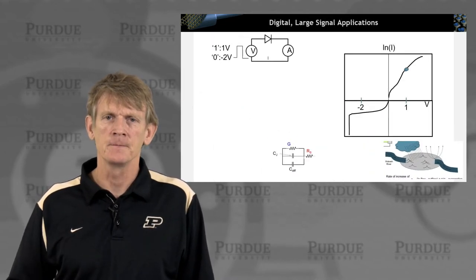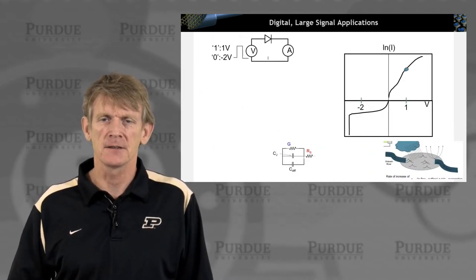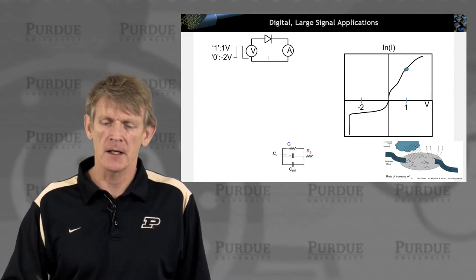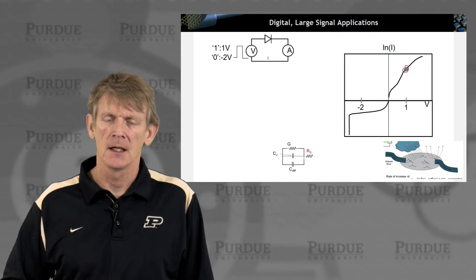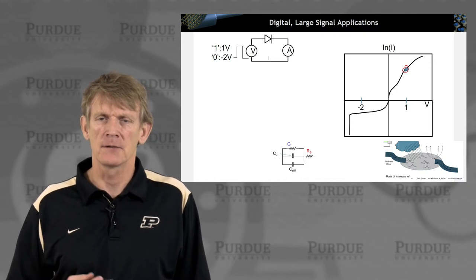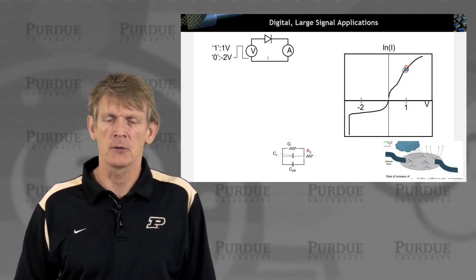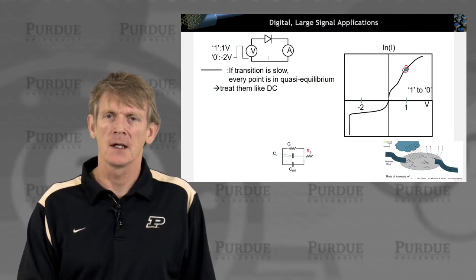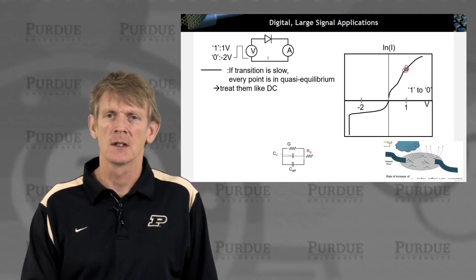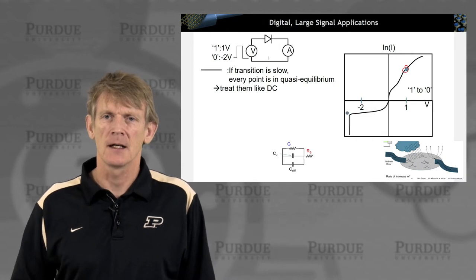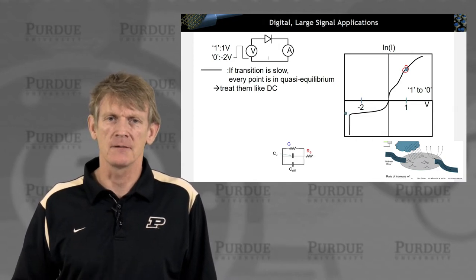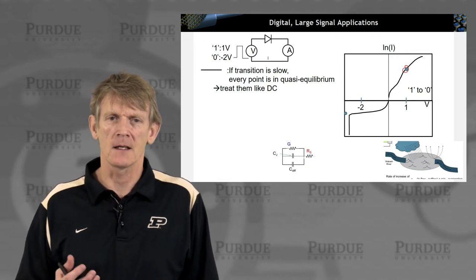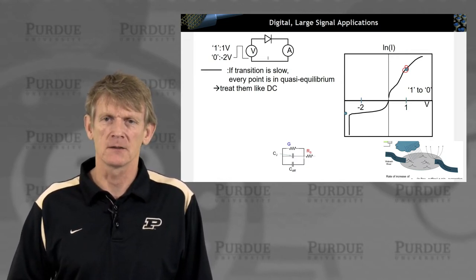So that being said, let's step forward and sketch again this IV that we have seen before, and imagine that we have a certain bias here. And we, at first, just for argument's sake, we ramp down the bias really slowly, and we imagine that the system can respond.